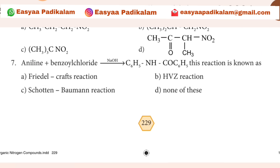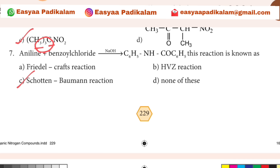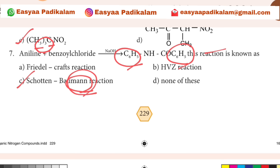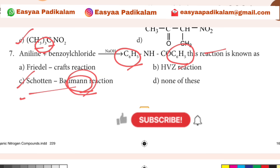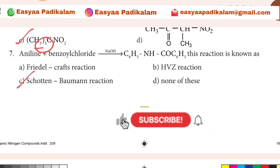Question 7: Aniline plus benzoyl chloride — C6H5. This reaction is known as? The answer is Schotten-Baumann reaction.